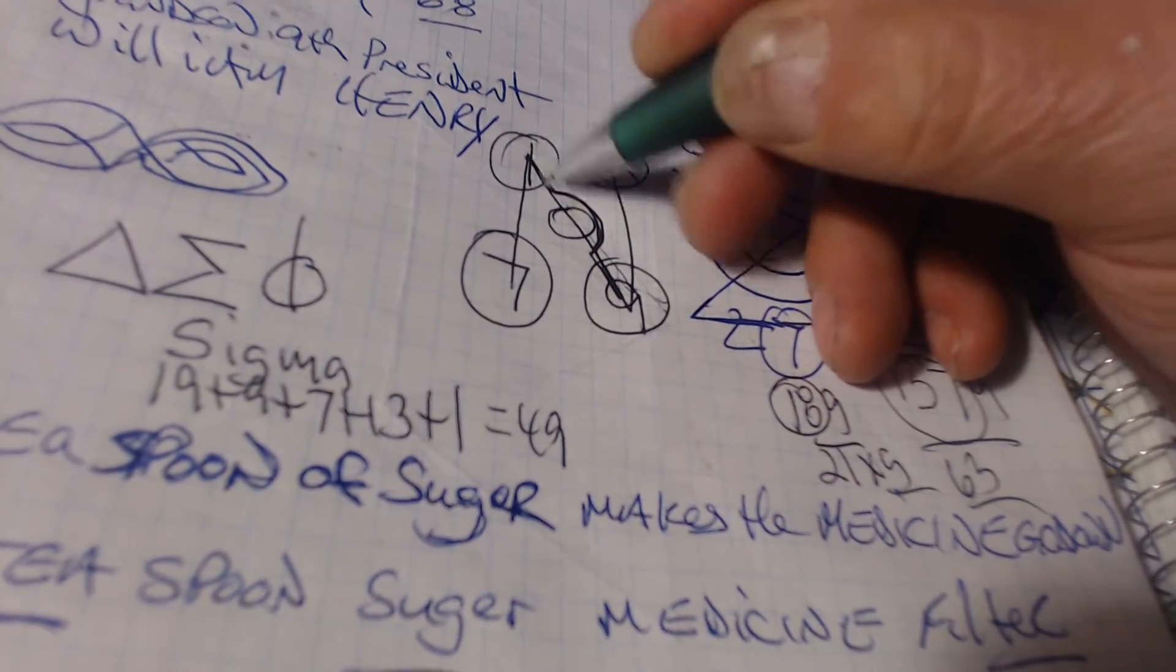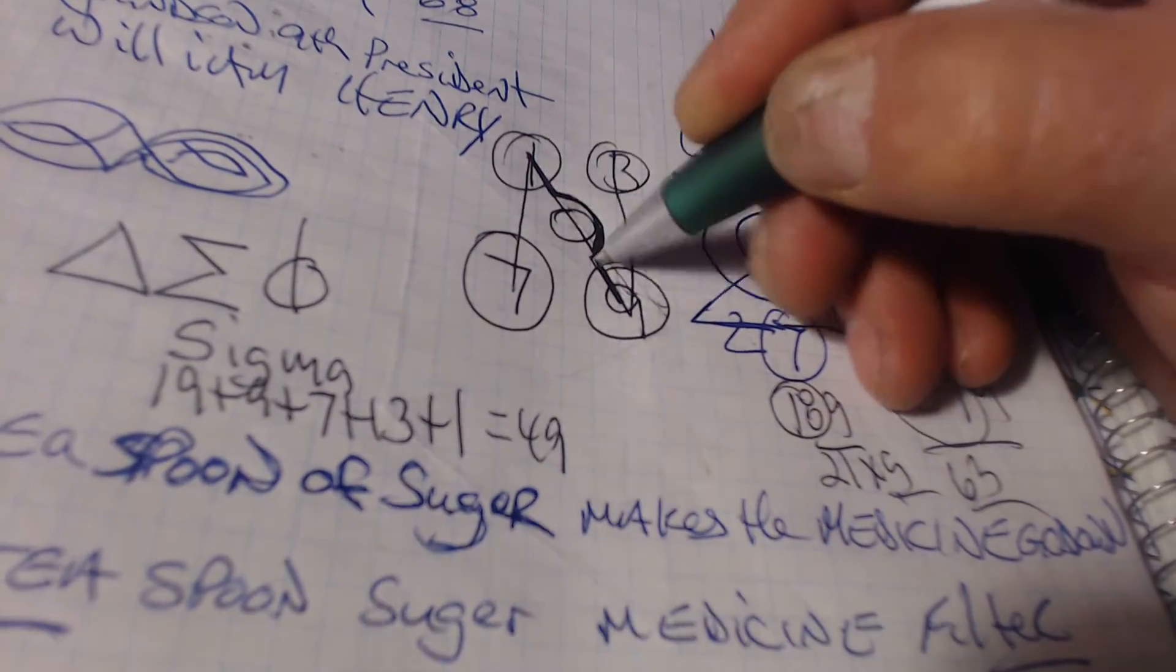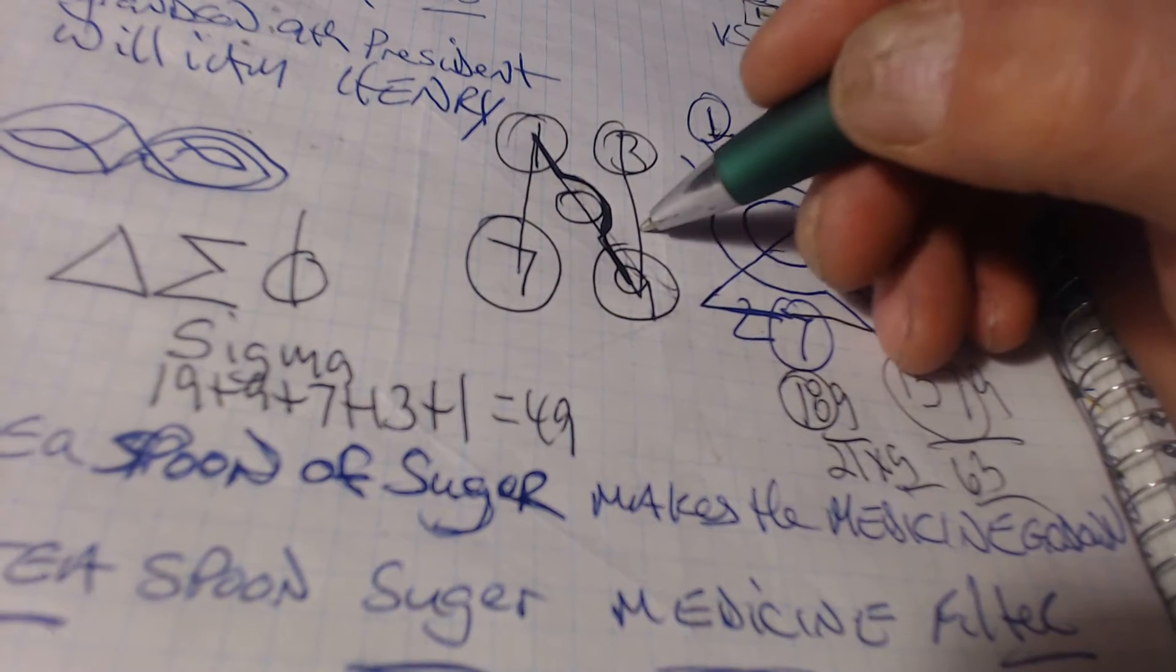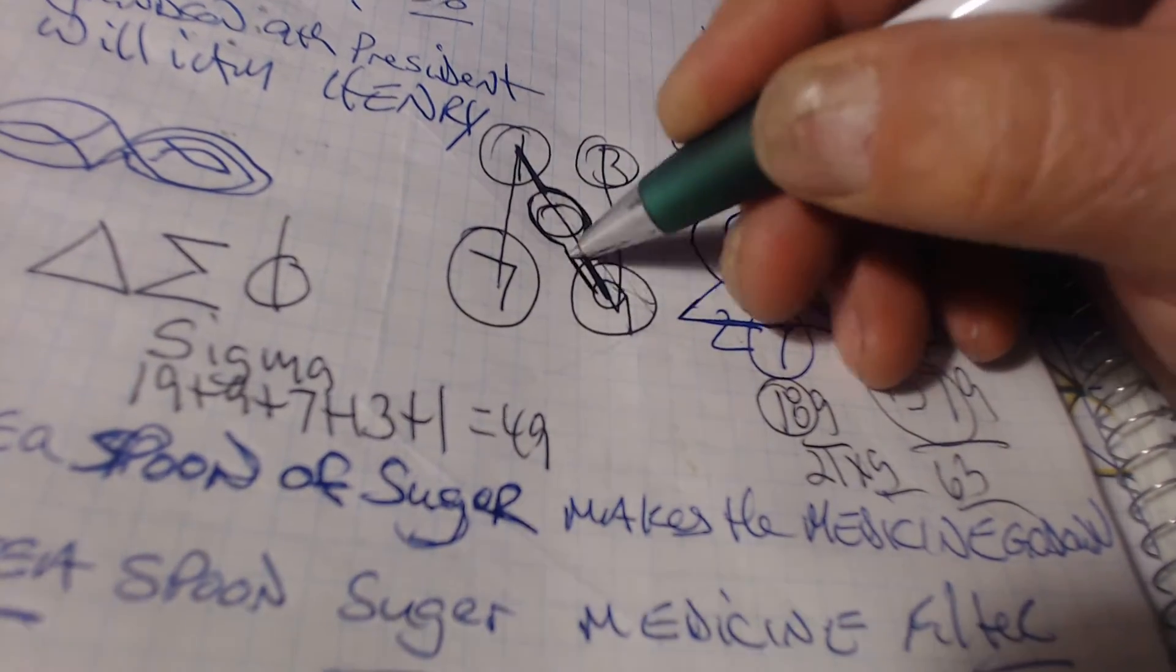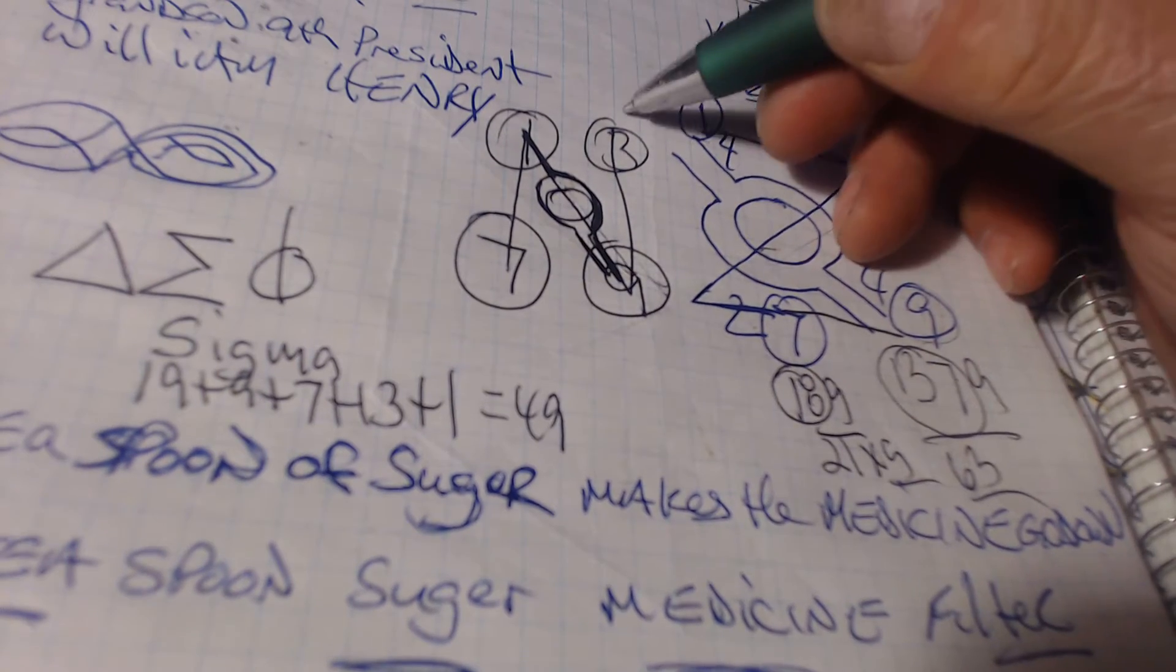You know the alpha omega sign, the sign of balance? Well, it runs this way or it runs this way, and back into 9.